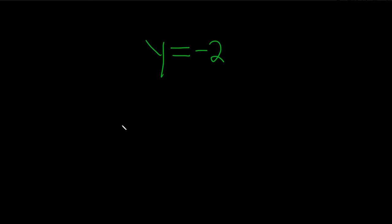In this problem, we have to graph this equation in a rectangular coordinate system. So the trick is, whenever you see an equation like this, y equal to some number, it's always going to be a horizontal line, no matter what.